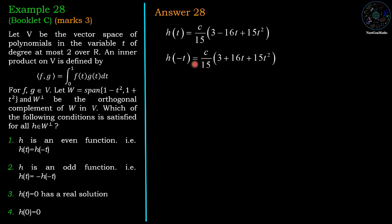Now we are going to find h(-t). Just replace t by minus t in the definition of h(t). Then we have c by 15 times (3 plus 16t plus 15t squared).